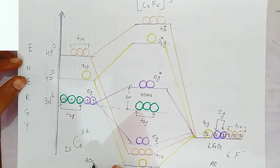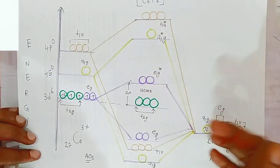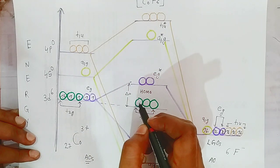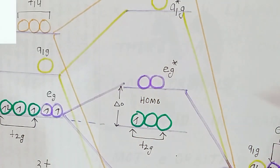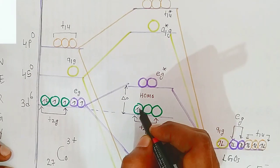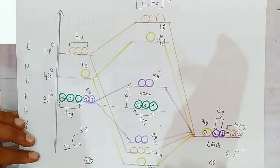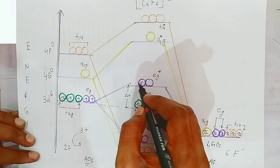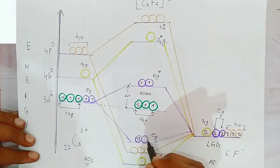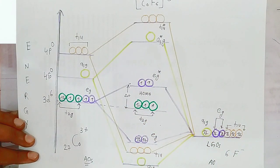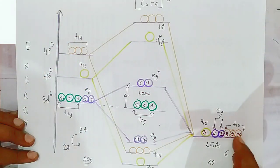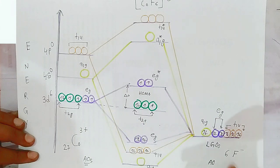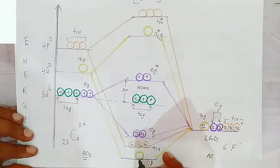The atomic orbitals of Co³⁺ overlap with the ligand group orbitals. The t₂g orbitals remain at the same energy level. The eg orbitals of the metal combine with the eg ligand group orbitals to form eg* and eg bonding molecular orbitals. The t₁u metal orbitals overlap with the t₁u ligand group orbitals, and all electrons go into the bonding molecular orbitals. Similarly, a₁g combines with a₁g to form the a₁g molecular orbitals with electrons.